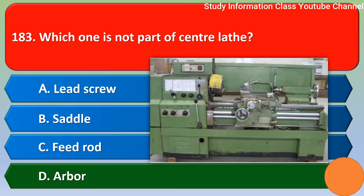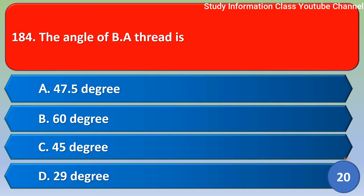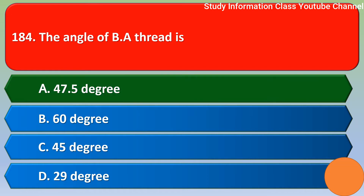Next question: the angle of BA thread is — option A 47.5 degree, option B 60 degree, option C 45 degree, option D 29 degree. The correct answer is option A — 47.5 degree.